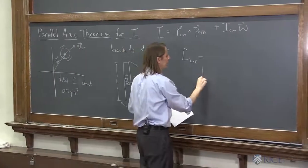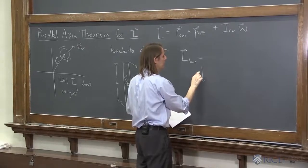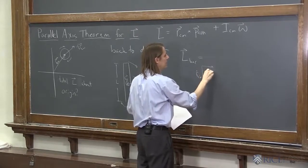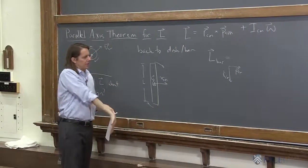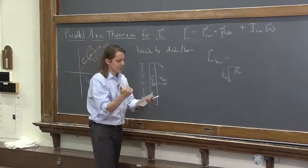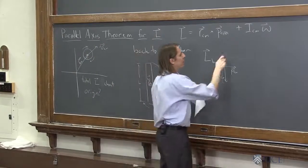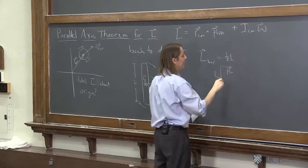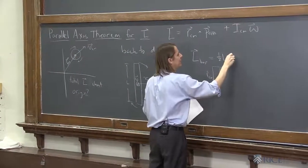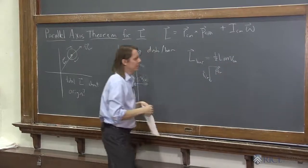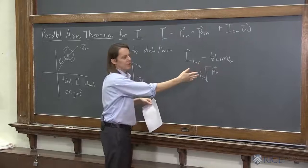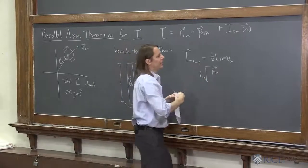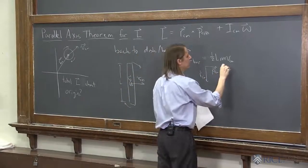and P is that way. R cross P, so it would be out of the board, and it would be R is one-half L, so that magnitude, that's MVCM, and then sine of the angle between them, sine of the angle between them is one, because theta is 90, and it's out of the board, so I'll just put out under it, like that.